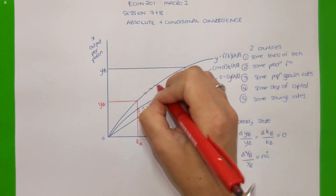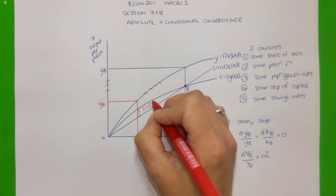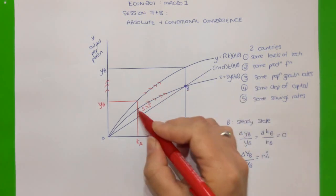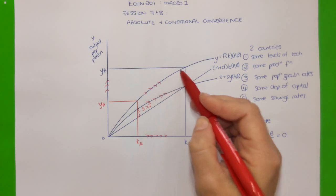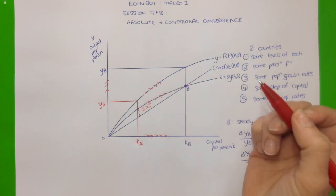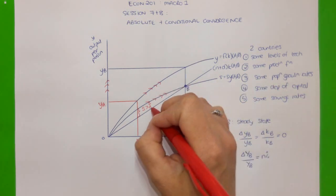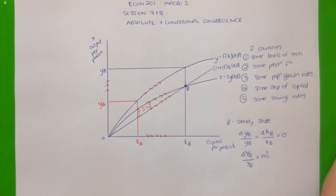Output per person increases, albeit at a decreasing rate. Savings per person increases at a decreasing rate because output per person increases at a decreasing rate, while the amount of investment required to maintain higher capital-to-labor ratios increases at a constant rate.